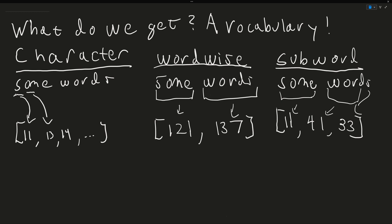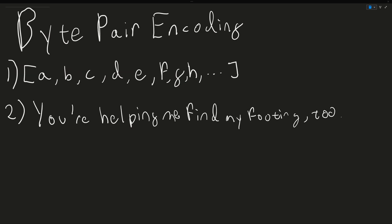In modern language models, the most popular type of tokenization is subword tokenization, with the most common type of this being a variant called byte pair encoding. The first step in byte pair encoding is to start with a vocabulary. In this case, A, B, C, all the way through Z.